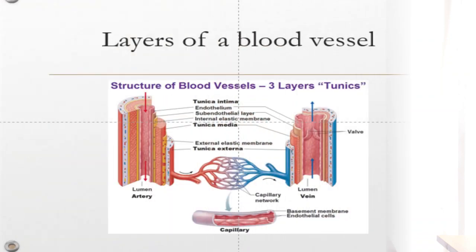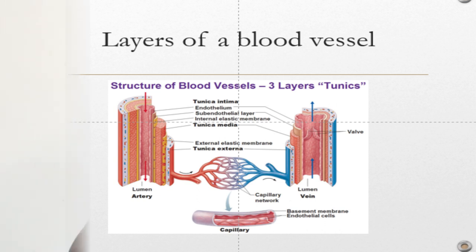A blood vessel has three layers, just like the heart, and we call these layers the tunics. From the outside in, we have the tunica externa — 'externa' from the word external, so it is the outermost layer. Just below it, we have the tunica media — 'media' from medium, meaning middle. And then we have the tunica intima — 'intima' from internal, meaning the innermost layer. So we have three layers: tunica externa, tunica media, and tunica intima.